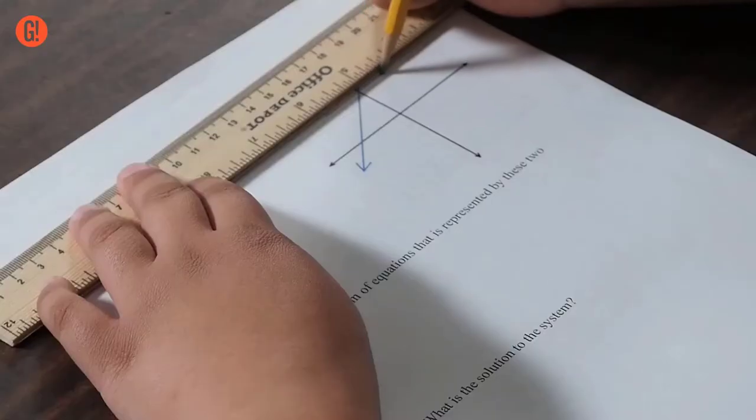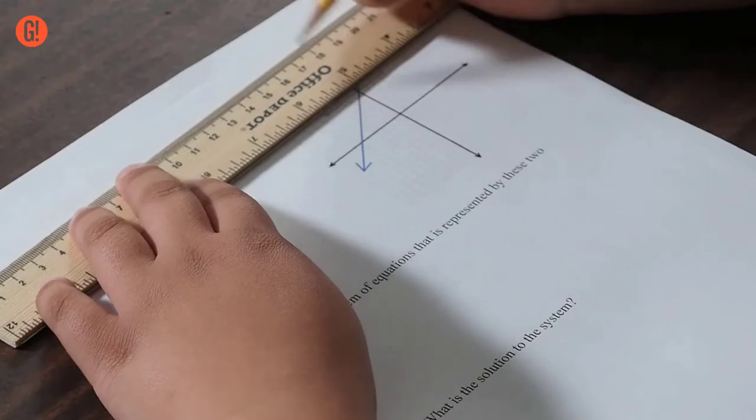They should also know that this solution is the one pair of numbers that works in both equations, and that the point of intersection on the graph is the same solution they'll get by doing the calculations.